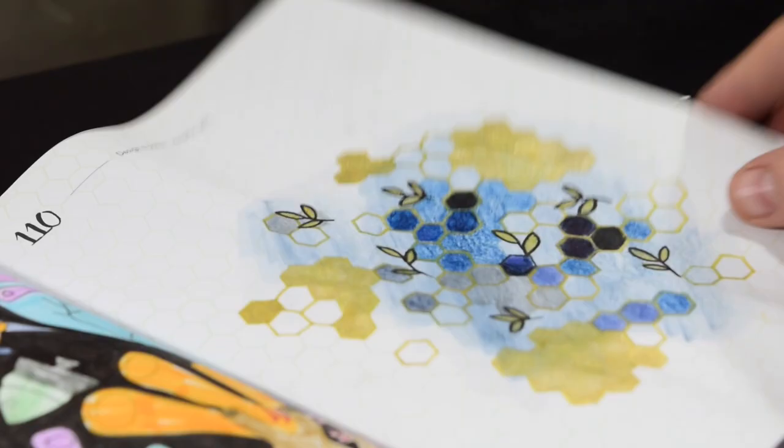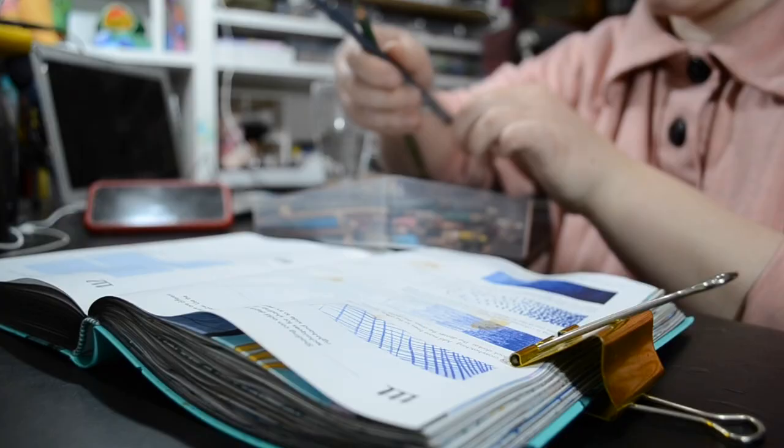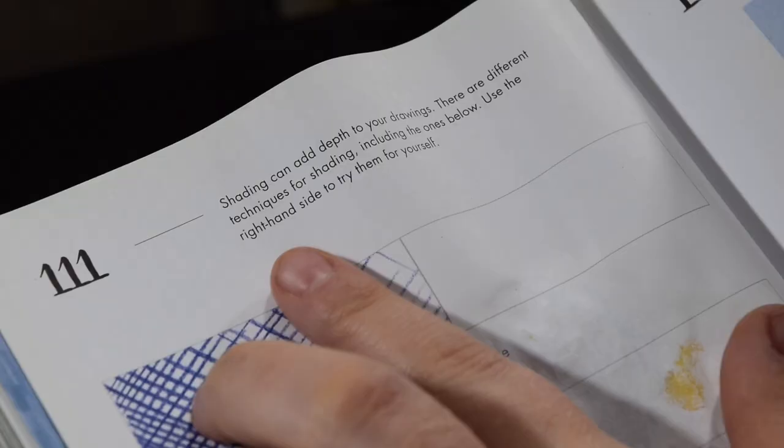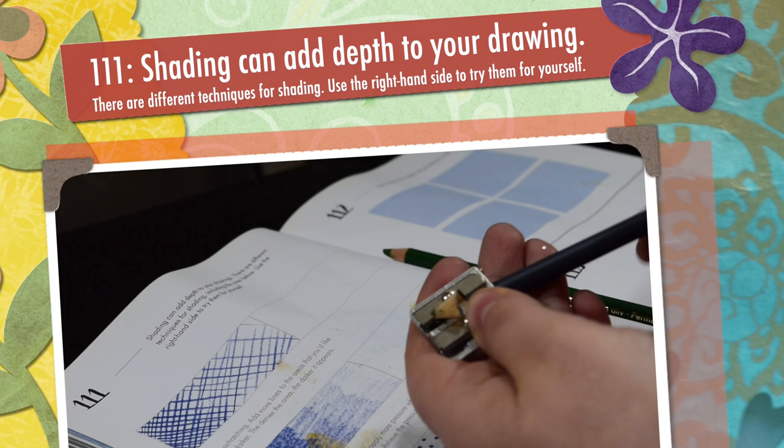Moving on to prompt 111. Shading can add depth to your drawings. There are different techniques for shading including the ones below. Use the right-hand side to try them for yourself. Basically they've given us some examples of different ways of shading and then we're going to copy them.